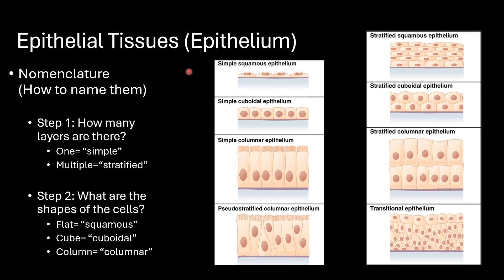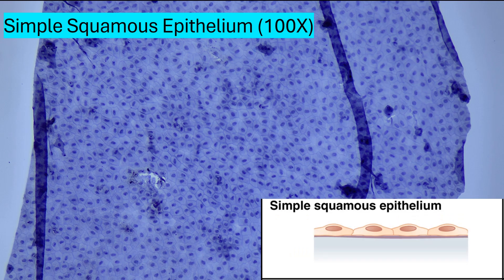Let's look at simple squamous epithelium. Here we are looking at a tissue sample at 100 power — magnified 100 times normal vision. When looking at these slides, they've been prepared with stains to enhance the color. Usually a 3D sample is cut with a microtome to produce a thin sample. This sample is mostly for demonstration purposes; here we are looking at a top-down view — the tissue layer of simple squamous epithelium has been peeled away from the basement membrane. Let's zoom in to 400 power.